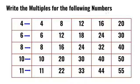Write the multiples for the following numbers. First, we have to write the multiples of 4. 4 ones are 4, 4 twos are 8, and so on. So 4, 8, 12, 16, and 20 are the first 5 multiples of 4.